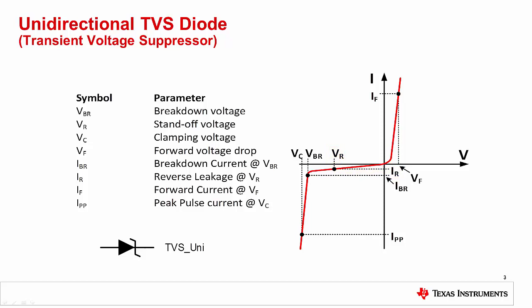The reverse standoff voltage is the maximum voltage that can be applied across the TVS diode while still maintaining a low leakage current — this is the off state for the TVS diode. The reverse breakdown voltage VBR is the point at which the TVS diode starts to break down and clamp the voltage. Finally, the clamping voltage VC is the voltage across the TVS diode when the peak pulse current IPP is flowing.